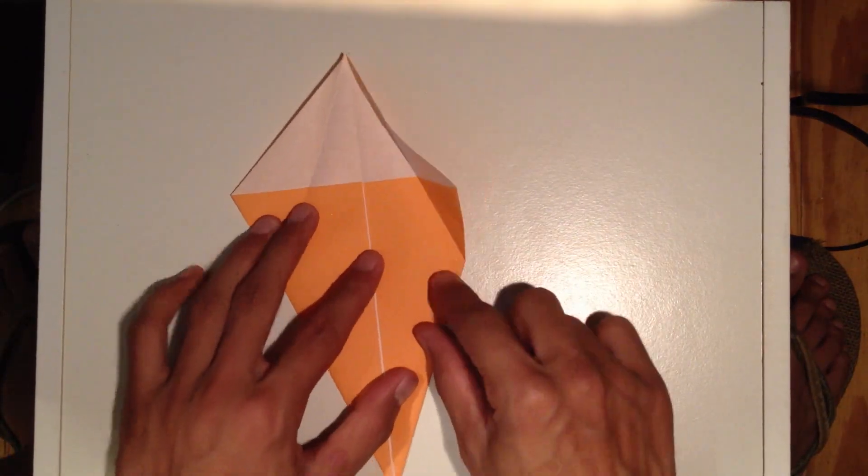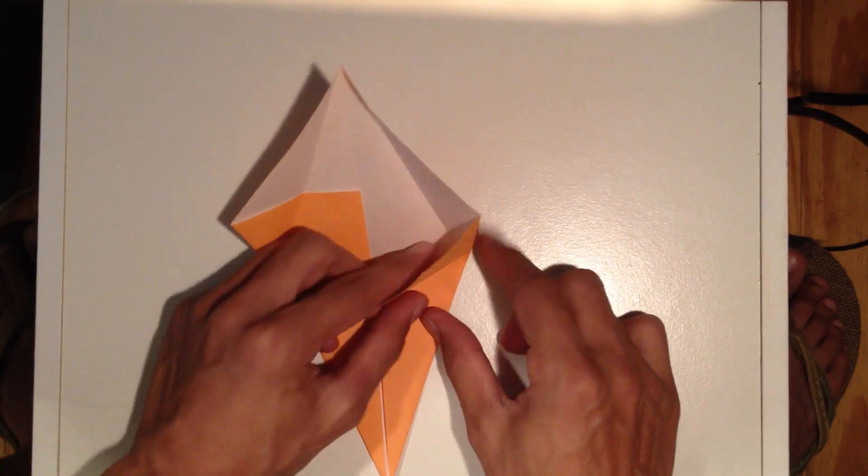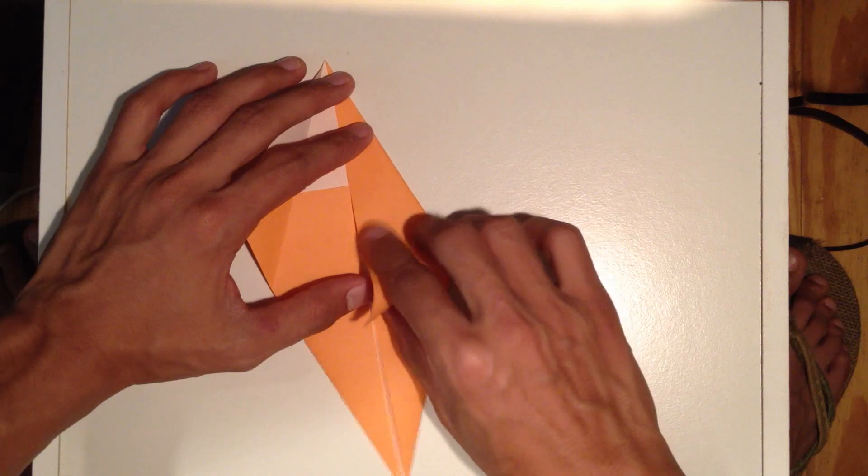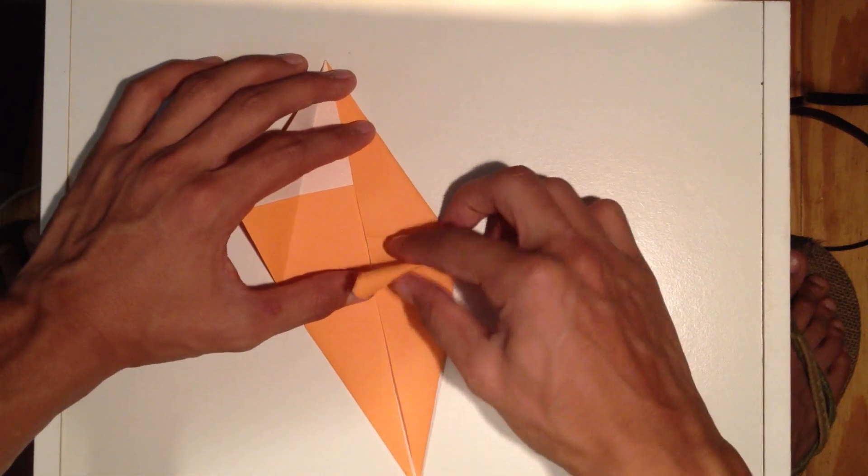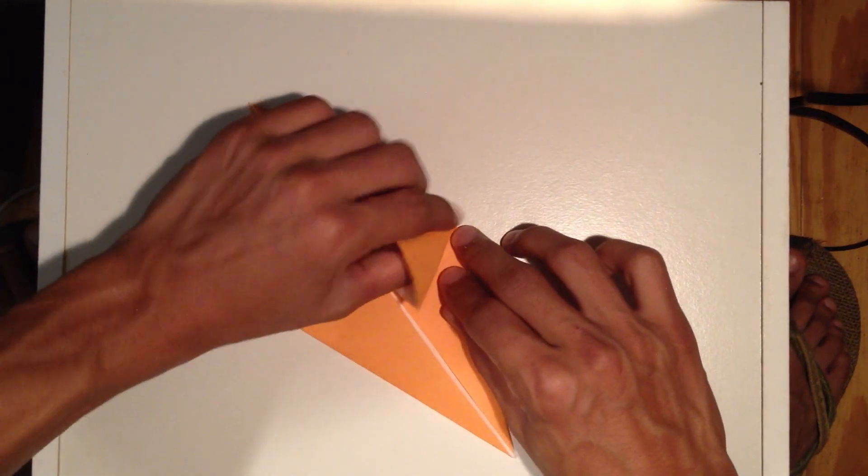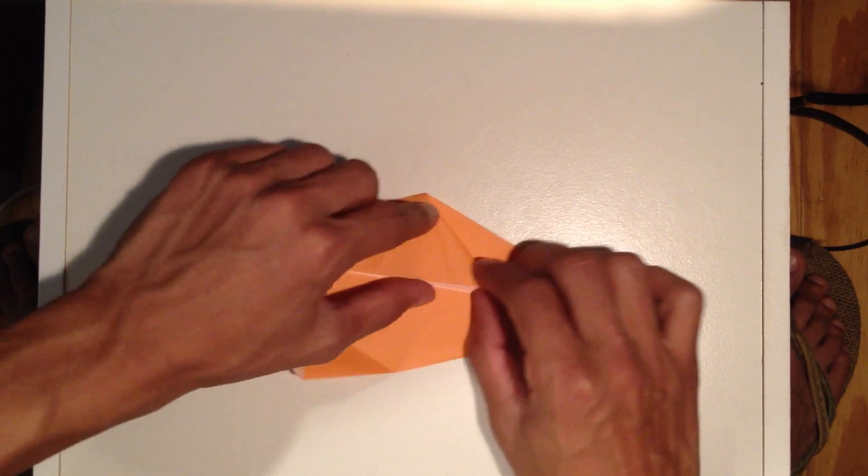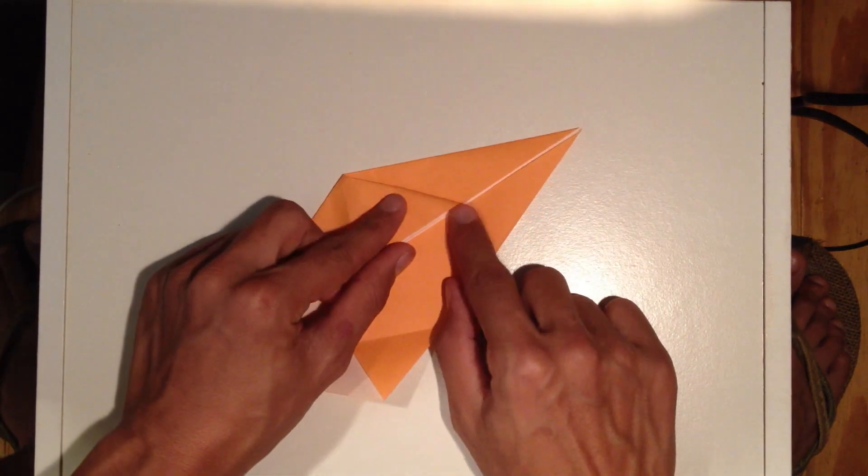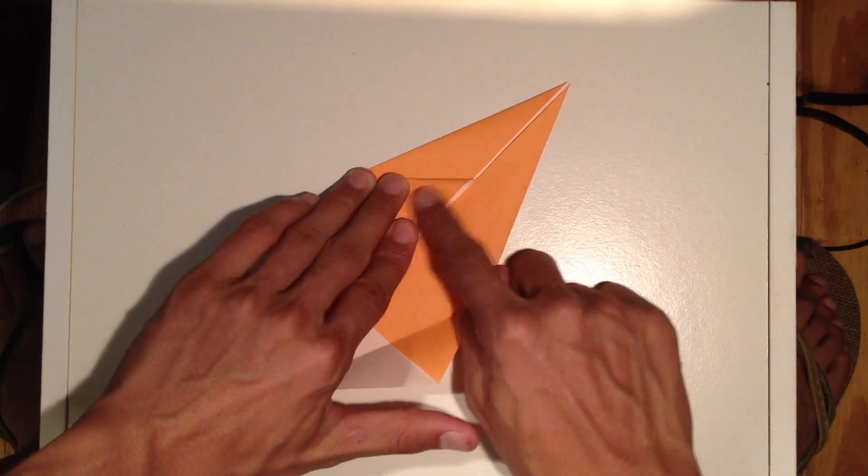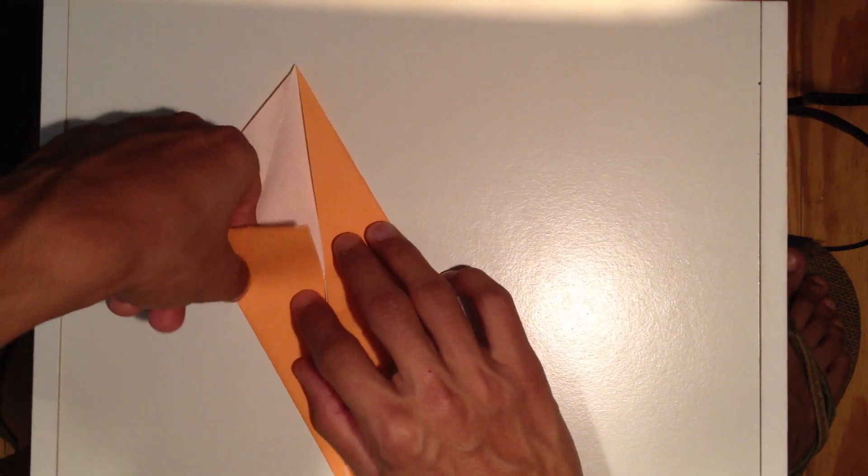And then the next thing we're going to do is open this up, and we're basically going to be pulling this flap down and kind of bringing this in. It might be a little tricky, but you kind of want to get it lined up. Get it nice, might take a minute. Basically, just want to get these to even out point to point, and then just press it down and follow through. We're going to do the same thing on both sides.